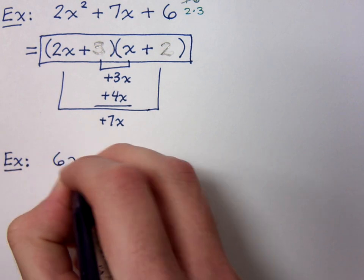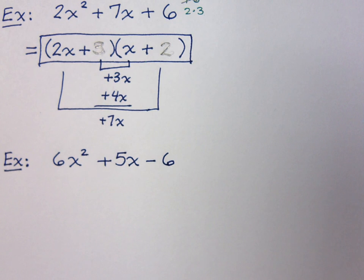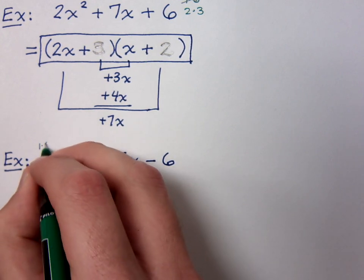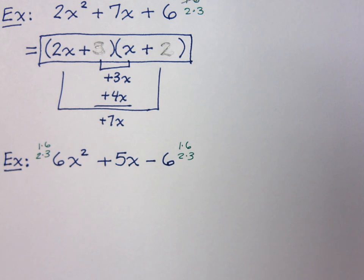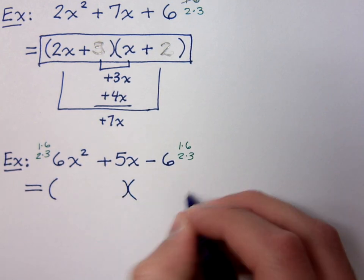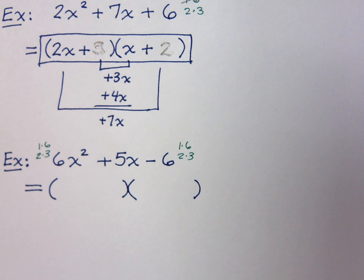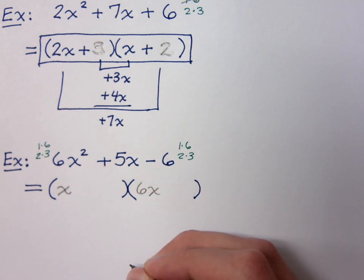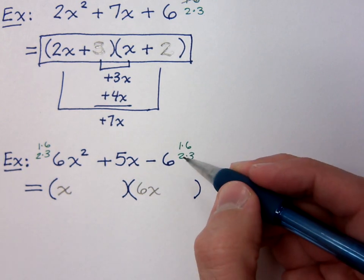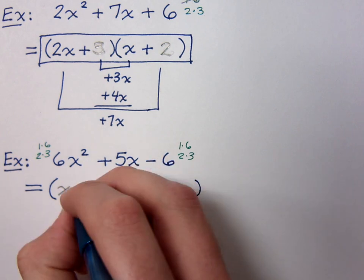Let's try another example: 6x squared plus 5x minus 6. I first want to list the factors for the lead coefficient and the constant term. For the lead coefficient I have 1 and 6, and 2 and 3 — and the same thing for my constant since that is 6 as well. I need a positive and a negative in order to multiply and get this negative, so let's put that down before we forget what our signs are supposed to be.